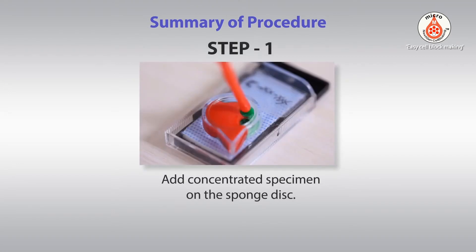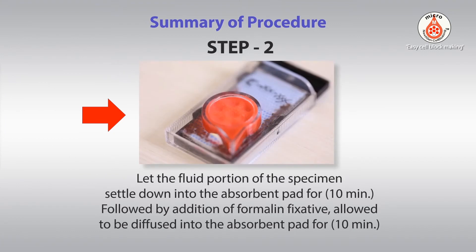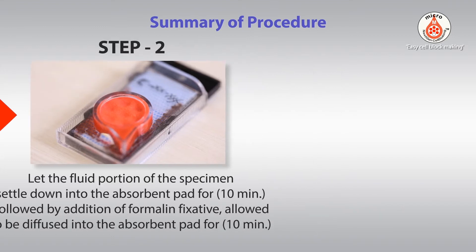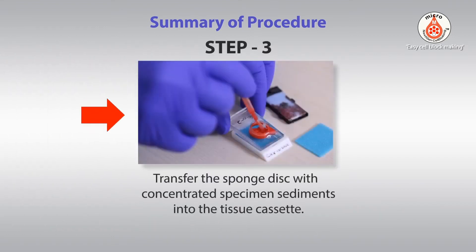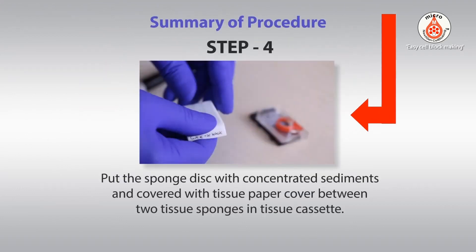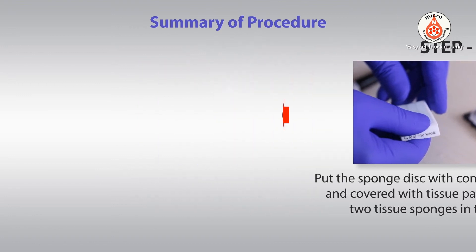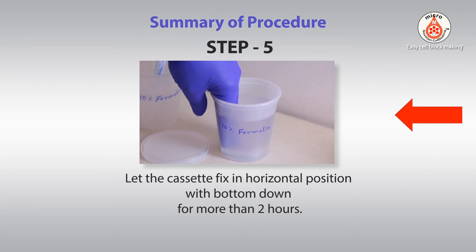Summary procedure: Step 1 — add concentrated specimen on the sponge disk. Step 2 — let the fluid portion of the specimen settle down into the absorbent pad for 10 minutes, followed by addition of formalin fixative allowed to diffuse into the absorbent pad for 10 minutes. Step 3 — transfer the sponge disk with concentrated specimen sediments into the tissue cassette. Step 4 — put the sponge disk with concentrated sediments, covered with tissue paper, between two tissue sponges in the tissue cassette. Step 5 — let the cassette fix in horizontal position with the bottom down for more than 2 hours.